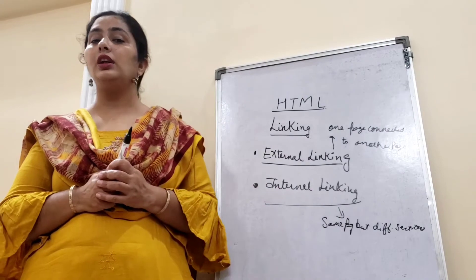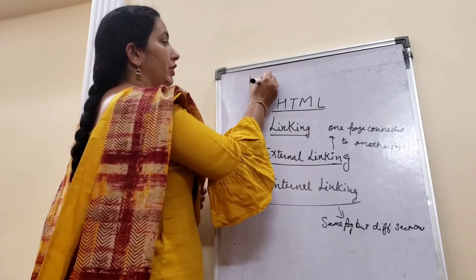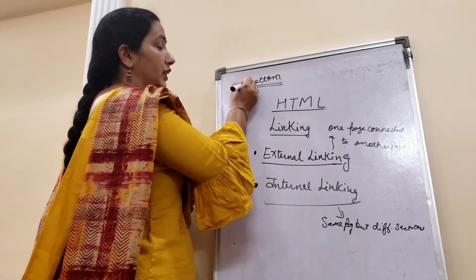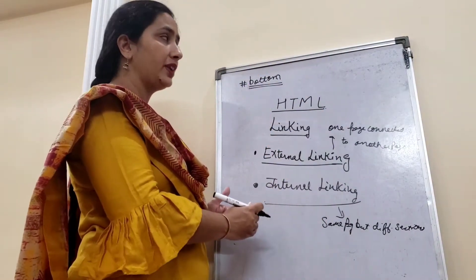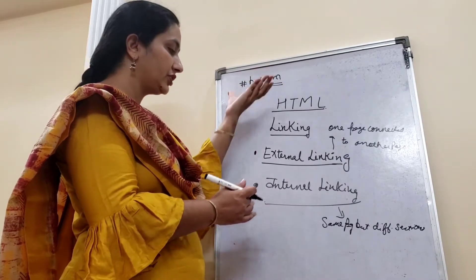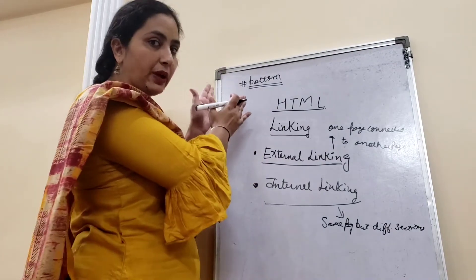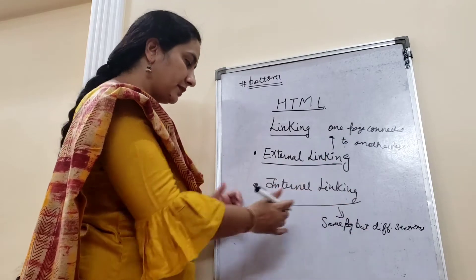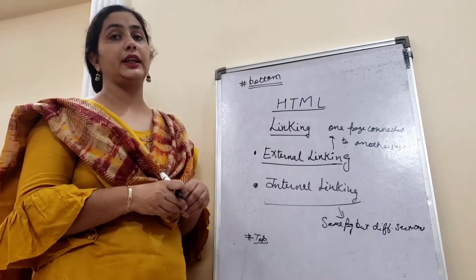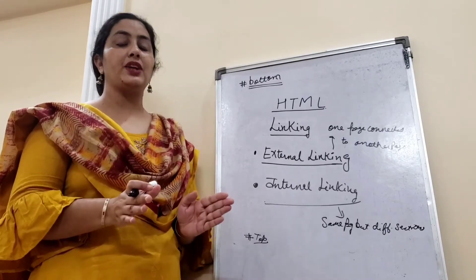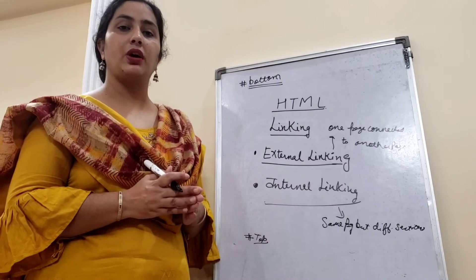The next type of linking is internal linking. Internal linking means when our page is very lengthy. Suppose you are at the topmost section of your webpage and you want to come to the bottom of the page directly, without using the scroller. You just click on a bottom button and it will take you to the bottom section of the webpage. This is called internal linking — when one section of the webpage is connected to another section of the same webpage. Similarly, from the bottom, you can come to the top of the page. So when on a single page, different sections — whatever number of sections one page has — are connected with each other, that is called internal linking.